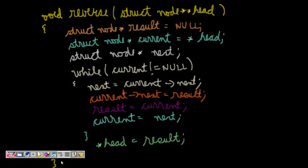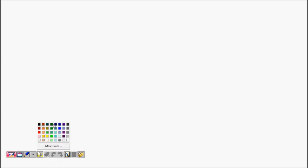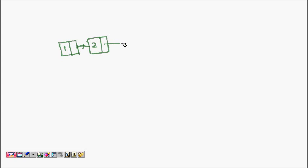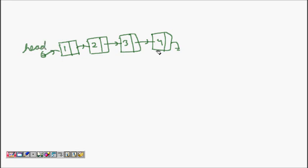In this lecture, our question is how to reverse a linked list. It is a very famous question that interviewers love to ask, and you should know how to answer it. We have a linked list — say one, two, three, four — a four-node linked list. This is the head pointer and we have our linked list.